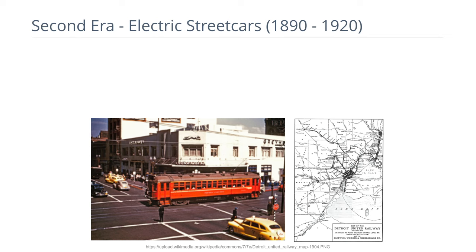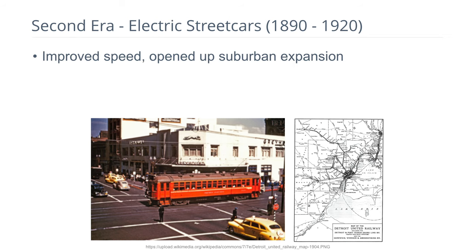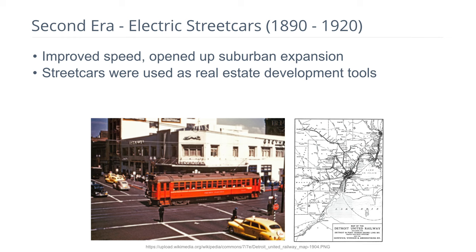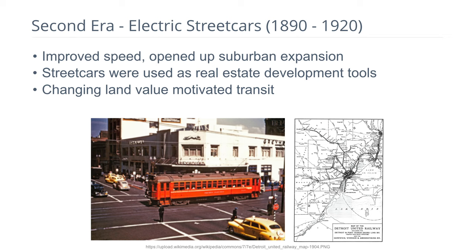The second era was the development of electric streetcars, which improved travel speed in cities and opened up suburban expansion. Those streetcars were used as real estate development tools so that agricultural areas could be made feasible for residential development by adding a streetcar. Detroit, Michigan and Windsor, Ontario also had streetcar systems in this era. The question of whether streetcars caused expansion or whether the need to expand cities produced the innovation of electric streetcars is a chicken-and-egg problem — I think they're co-determined.